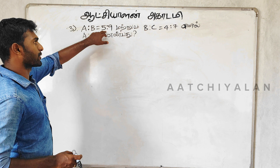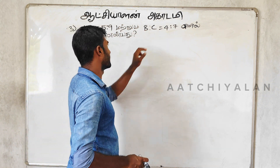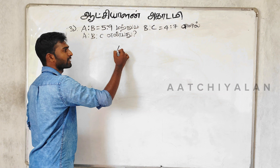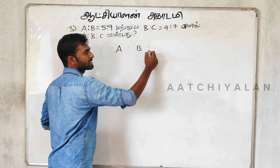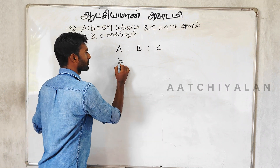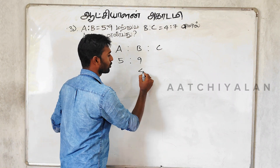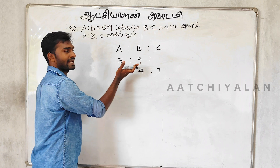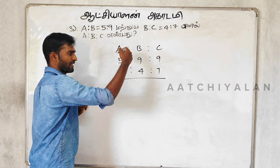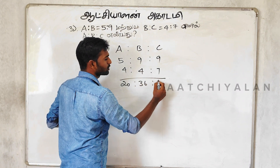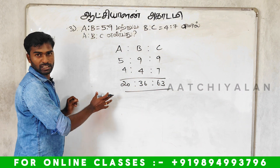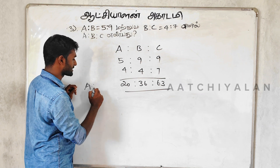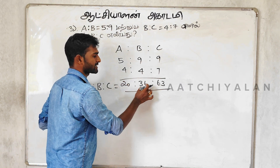Next step. A is to B is equal to 5 is to 9. Now, B is to C is equal to 4 is to 7. If you have A to B to C. Now, A is to B equal to 4 is to 7, and B is to C is 4 is to 7. Here is 9, 4 is like this. Now, 20 is to 36 is to 63. The answer is: A is to B is to C is equal to 20 is to 36 to 63.